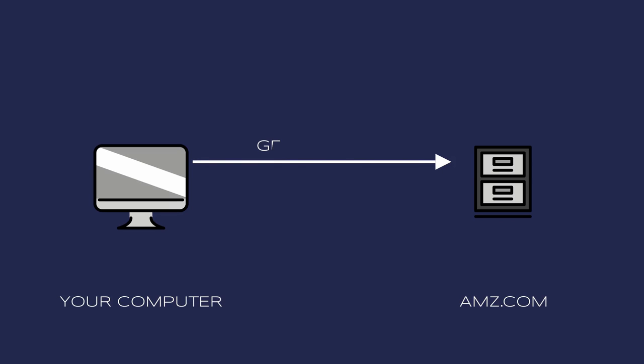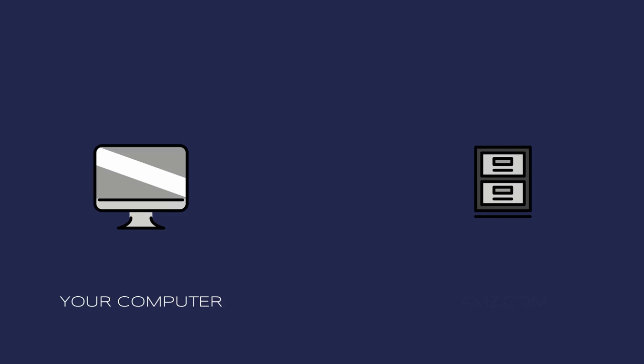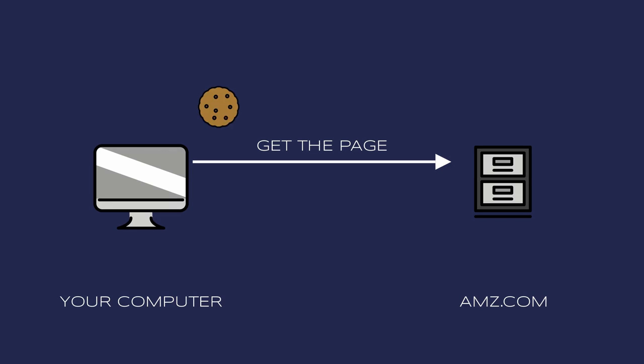What happens is that your browser goes to the server on which the website is hosted and requests a page. As the server replies, along with the content of the page — like text and images — it also includes a little file that gets stored on your computer. This file contains an identifier, a unique number associated with your computer. Next time you navigate to that same site, your computer, along with the request for a page, will also send back the cookie.